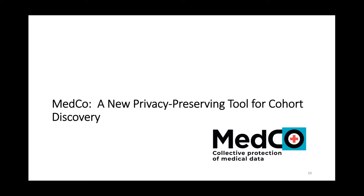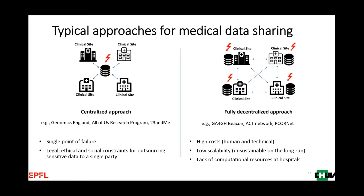To give some motivation for why we believe this matters: to share data there are two typical approaches. The centralized approach has one single repository where all hospitals push data — initiatives like Genomics England or the All of Us research program are examples. But from a security point of view, this introduces a single point of failure, because if the repository is compromised, all the data can be leaked. There are also often legal, ethical, and social constraints preventing hospitals from outsourcing data to a single repository.